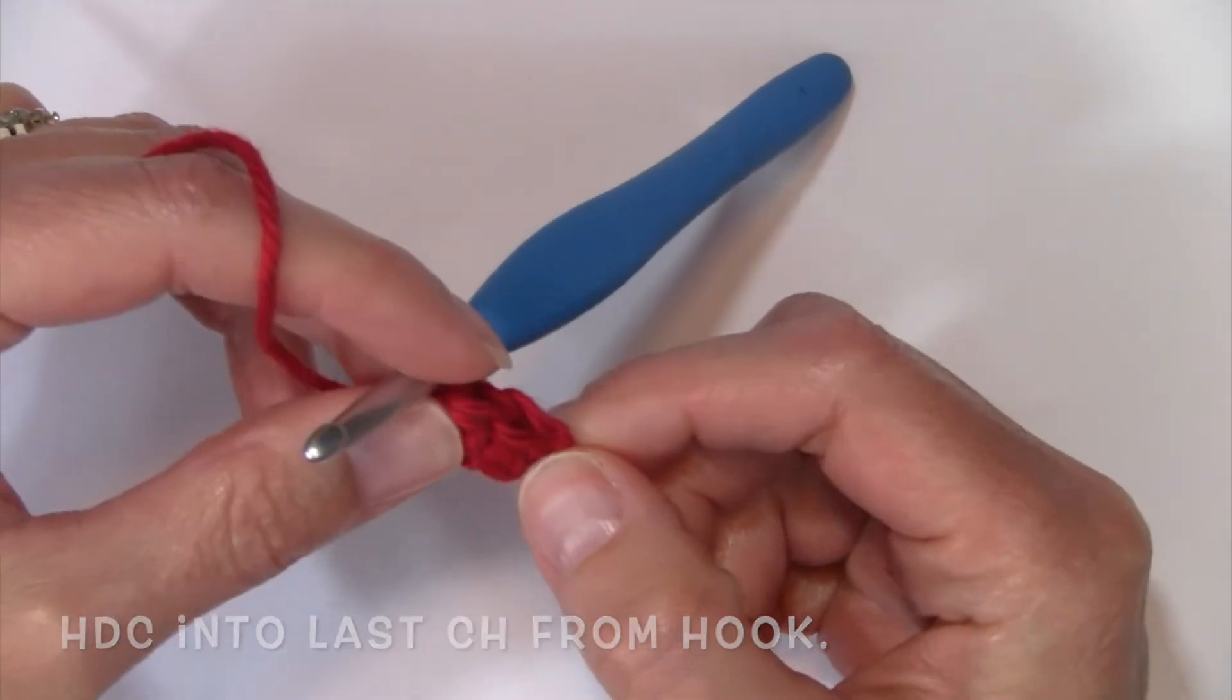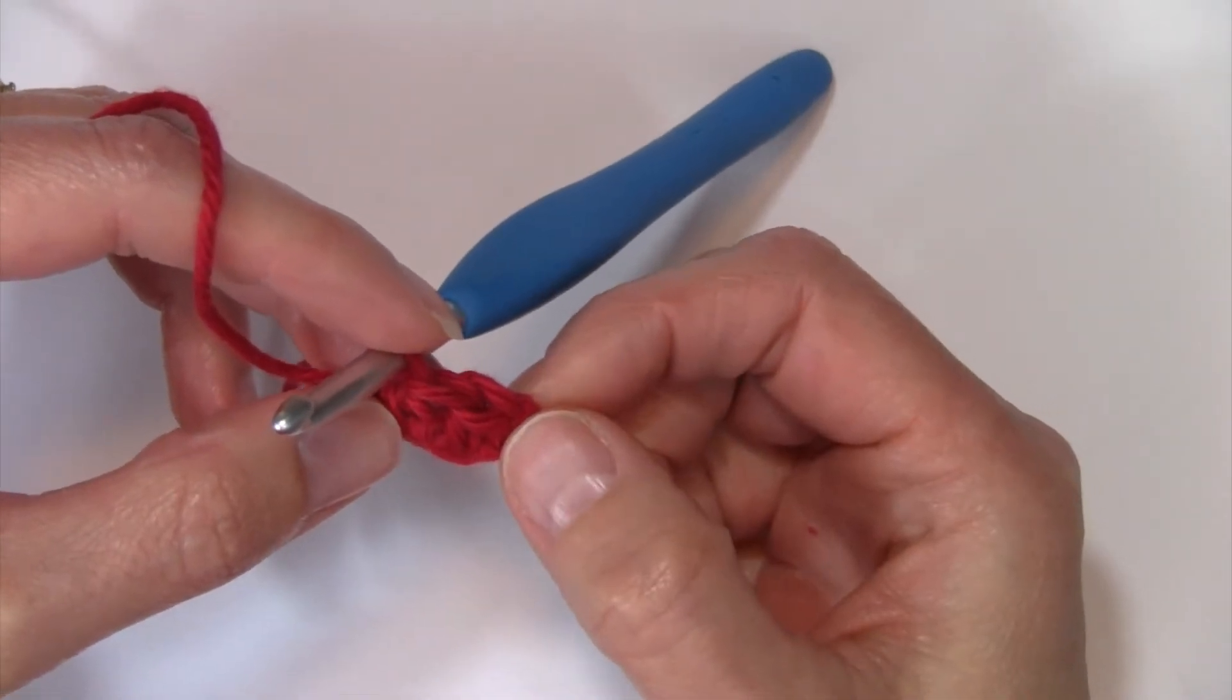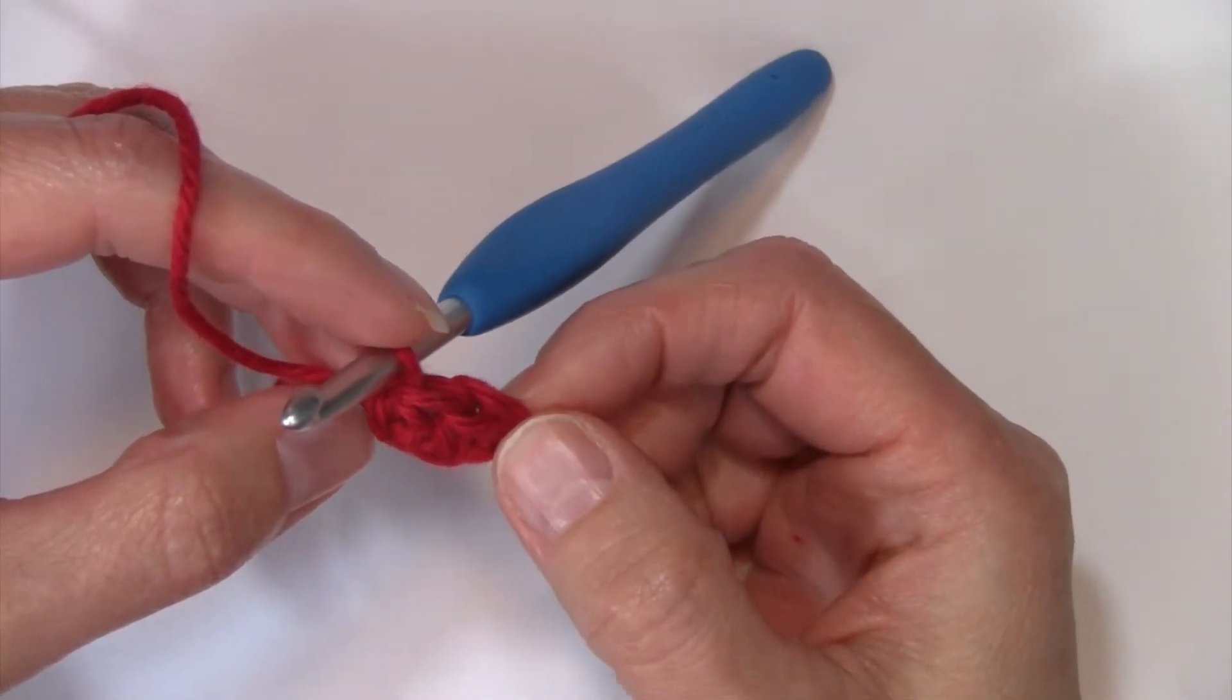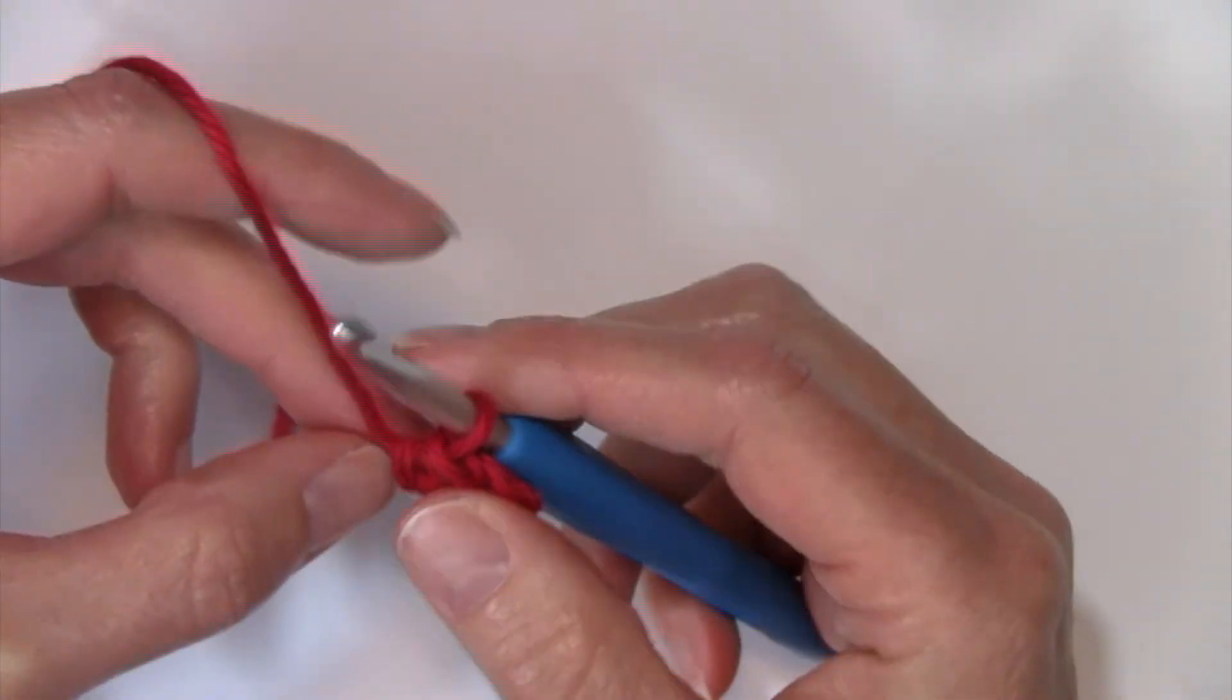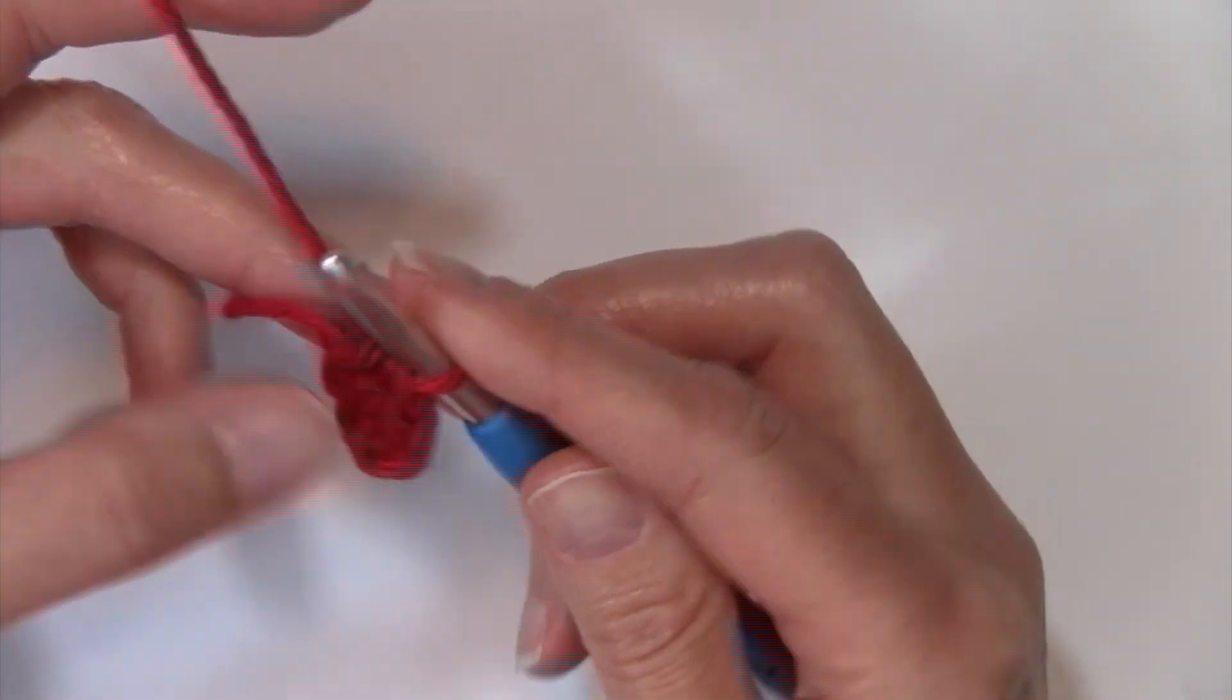The change from a double crochet again is we would have chained six for a double crochet and we would have worked three double crochets to make a block. So that is the change for that.